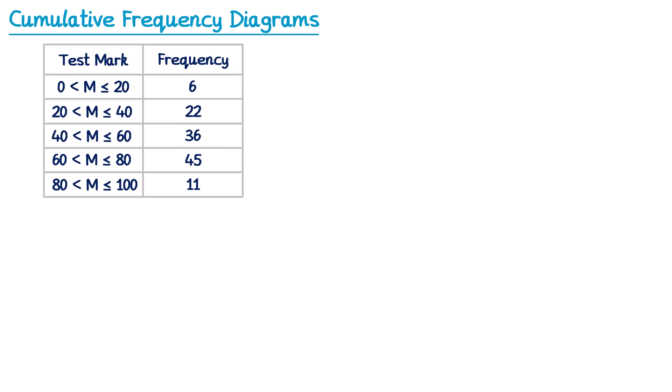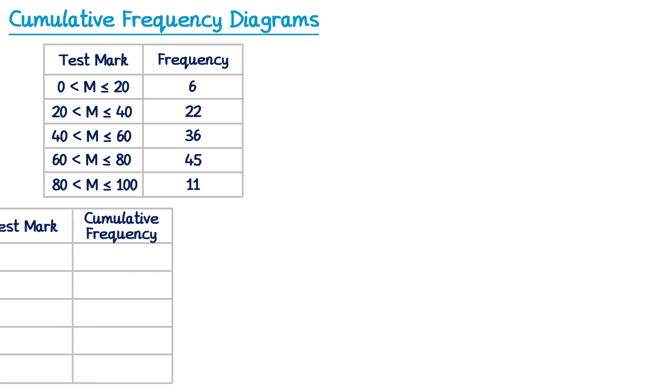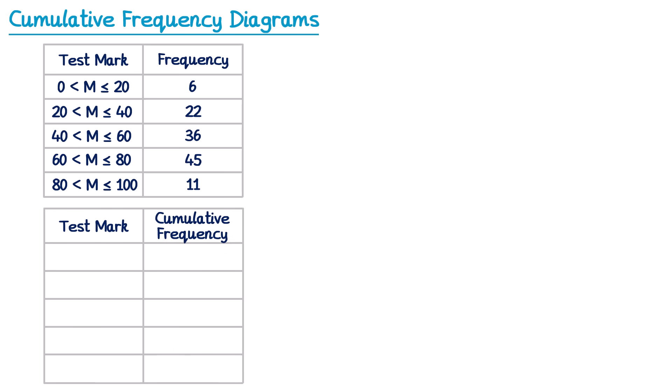In an exam it's really common for them to ask you to complete a cumulative frequency table. For a cumulative frequency table the first entry will always be the same as the regular frequency table. Looking at the first entry, it goes from 0 to 20 marks with a frequency of 6, so we just copy this over into the cumulative frequency table as well.